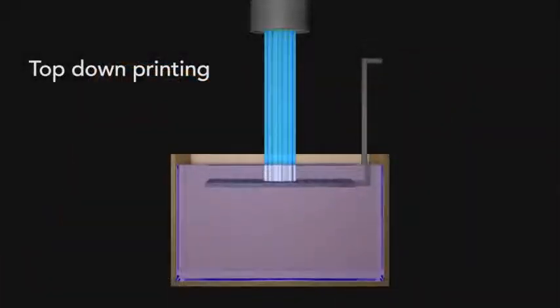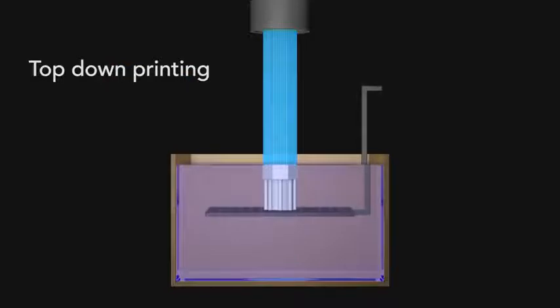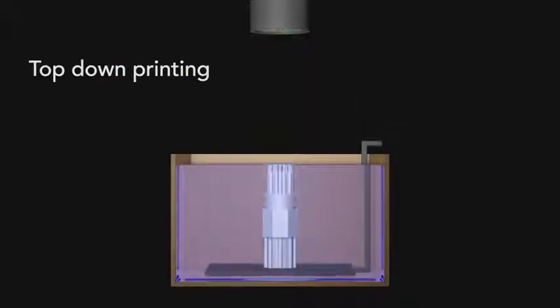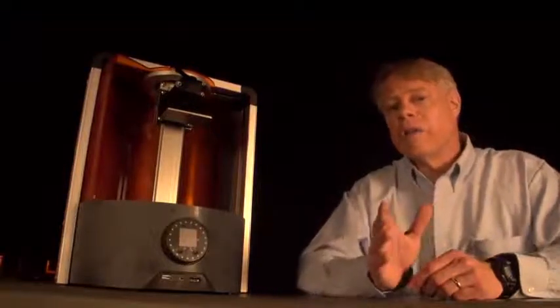In top-down, a platform moves down into a vat of resin while light is projected down from the top. The great advantage of this top-down is that it is easy to expose a layer to light and cure it, but it also has a very big drawback. The vat must be as tall as the part to be printed. And this requires a large volume of resin, which can be very expensive, particularly if the resin has a finite lifetime.